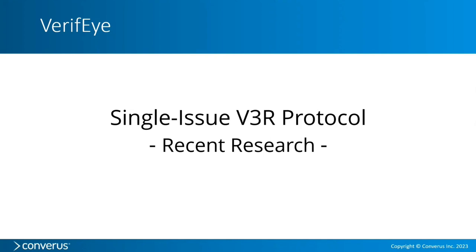We're going to talk about something called a single-issue V3R protocol. Essentially it's the V3R protocol, but it's single-issue in that the guilty subjects were programmed to commit one single-issue mock crime. That mock crime is the tried-and-true University of Utah mock crime scenario that we've been using, and that Dr. Kirch and Dr. Raskin have been using for years.